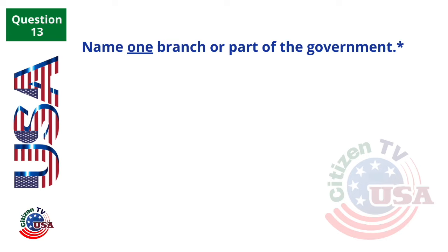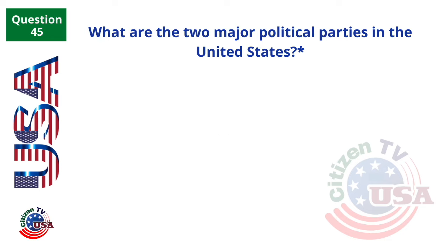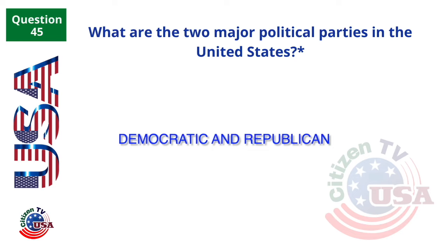Name one branch or part of the government. Congress. Who was president during World War I? Woodrow Wilson. What are the two major political parties in the United States? Democratic and Republican.